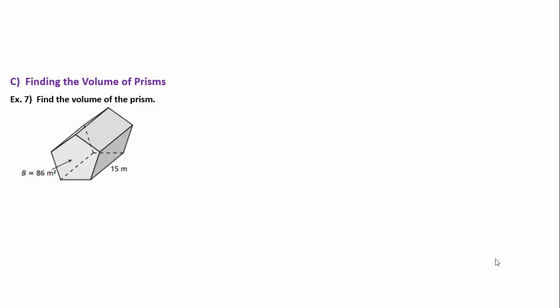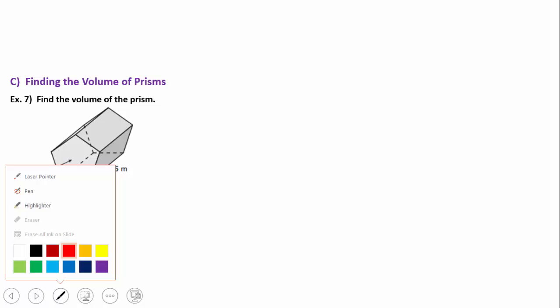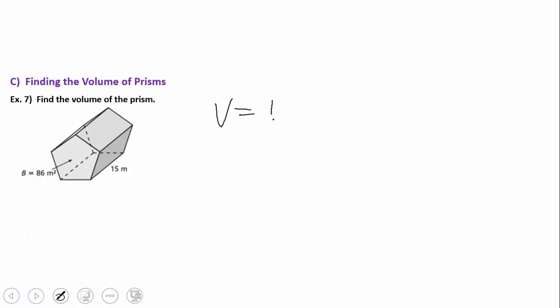Welcome back to video number two on volume of prisms. We're going to continue finding the volume of prisms. The first thing I think of is volume of a prism - I've got to have area of the base times the height. Then I look at my prism. What kind of prism do I have? I find and identify the base.